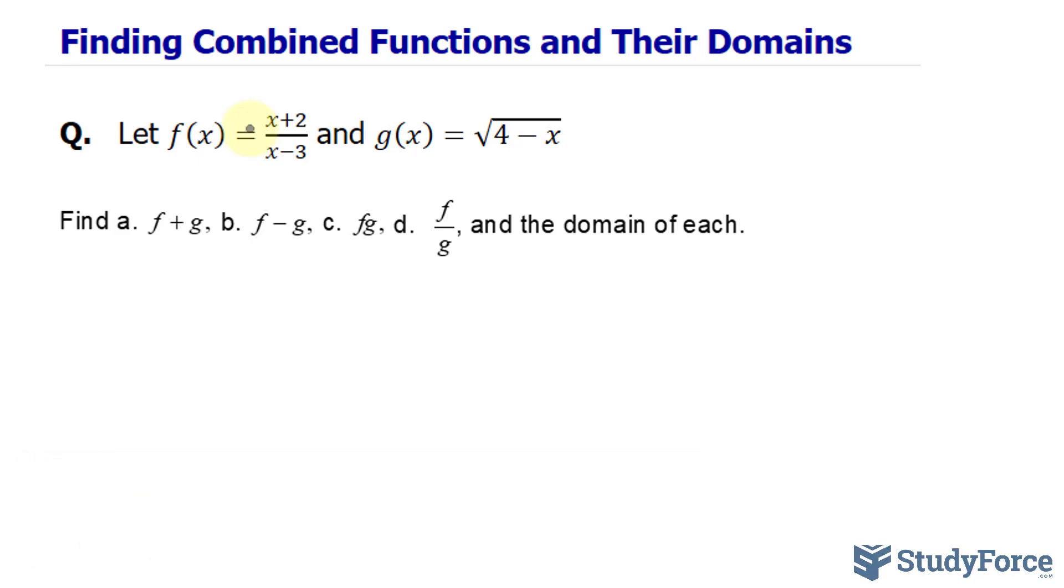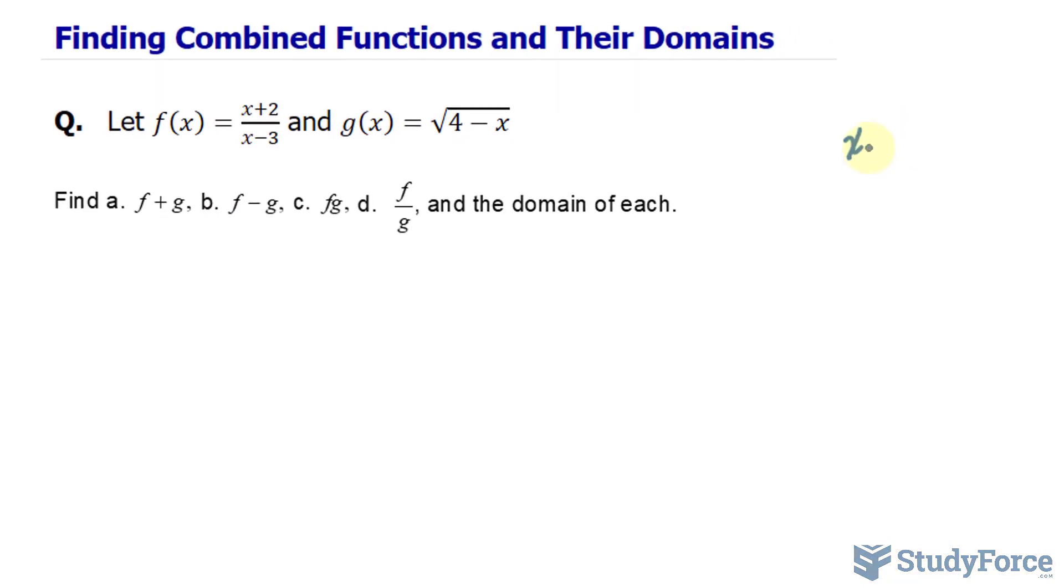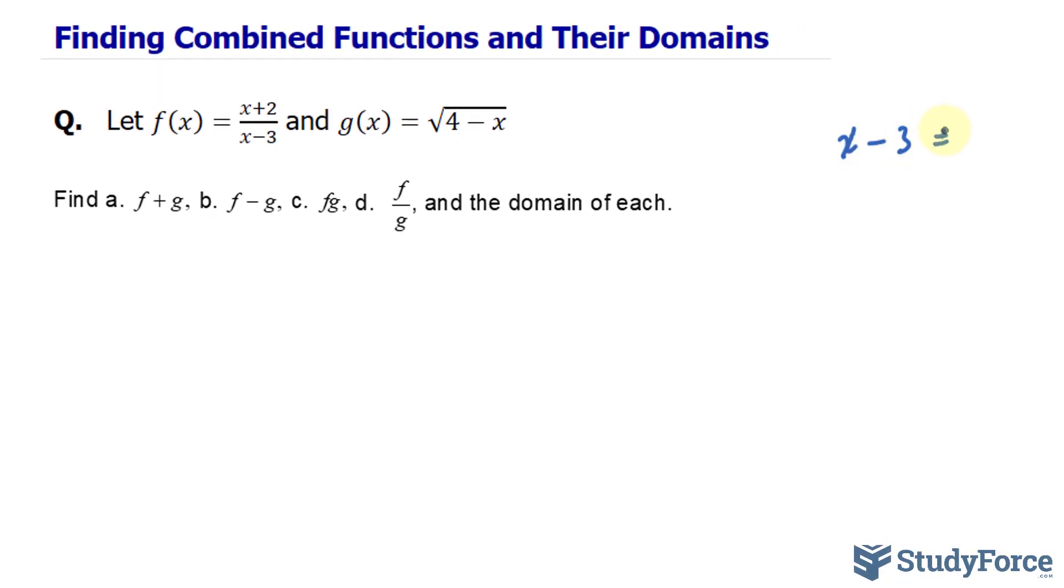If we wanted to find the domain of this function in particular, I know that the denominator cannot equal zero. So to find out when it does become zero, we can say x minus 3 does not equal zero, and solve for x. So we have x does not equal 3. This would become zero if x were equal to 3, therefore x cannot equal 3 for this function.